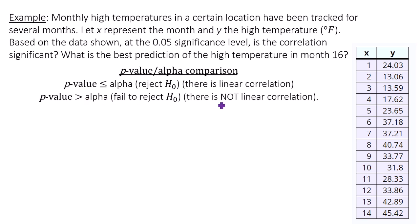If the p-value is greater than alpha, there is not linear correlation. If there's linear correlation, then we can use the linear regression equation that we get from Google Sheets to make predictions. If there's not linear correlation, then the best prediction is the average of the y-values.